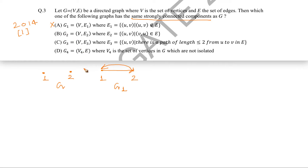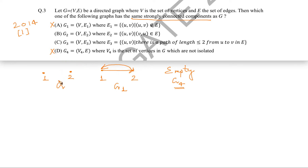For G4, using the same example graph, the definition says only non-isolated vertices are part of G4. Since both vertices are isolated, neither exists in G4, making G4 an empty graph with no vertices and no edges. G has two strongly connected components while G4 has zero, so option D is also not the answer.